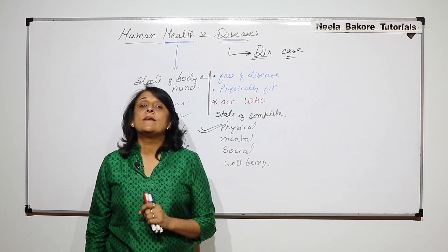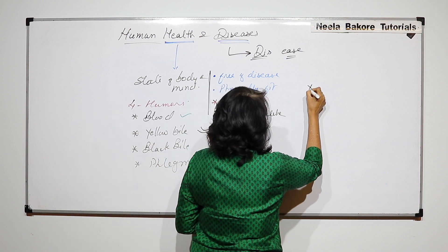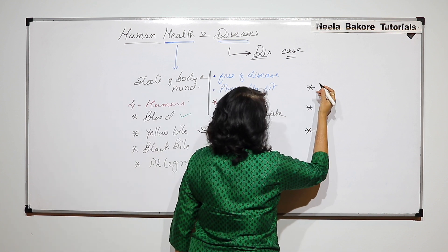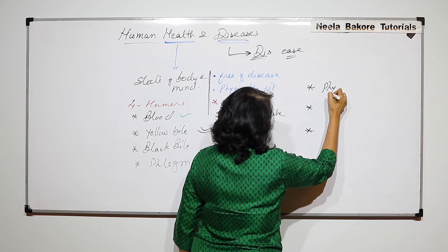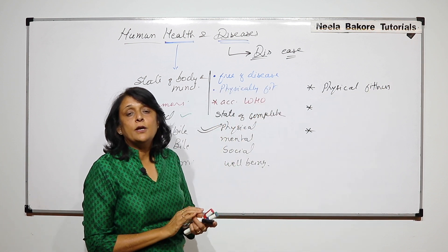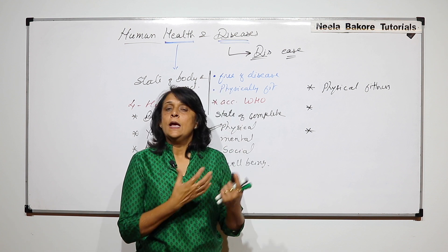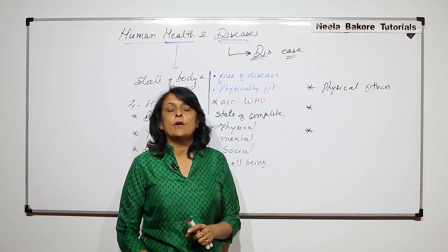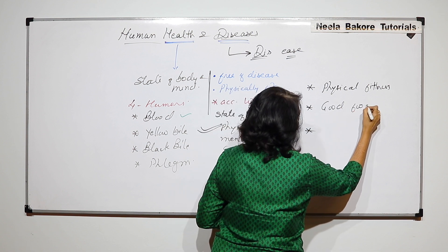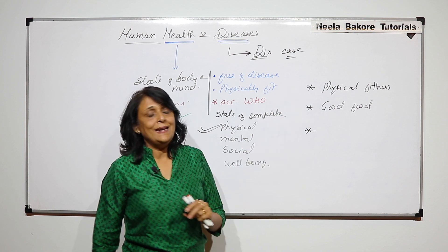Now what exactly is required to stay healthy? There are three main parameters which are required if you want to stay healthy. Number one is physical fitness. Here physical fitness doesn't mean that you go to gym and get your biceps and triceps developed. Here we are talking about physically if all the body parts and all the organs are working properly. Then there is good food, that is proper nutrition for working of all these parts. And then there is exercise.